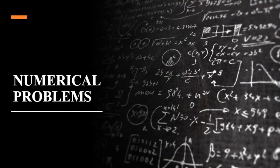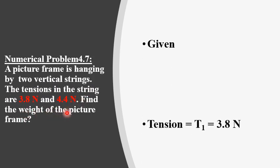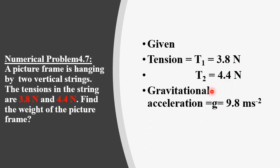Numerical Problem 4.7: A picture frame is hanging by two vertical strings. The tensions in the strings are T1 = 3.8 N and T2 = 4.4 N. Find the weight of the picture. Given: T1 = 3.8 N, T2 = 4.4 N, and g = 9.8 m/s². We have to find the weight of the picture.